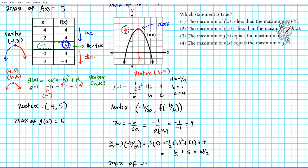So the maximum value of the last function j of x is 4 and a half. So now that we've found all four maximas, we're now going to go ahead and carry out our comparison. So number 1, option 1 says the maximum of f of x is less than the maximum of j of x. So let's input our values and see if it's a true statement. Maximum of f of x is 5. Is 5 less than the maximum of j of x, which is 4 and a half? Is 5 less than 4 and a half? Nope, so this is false.